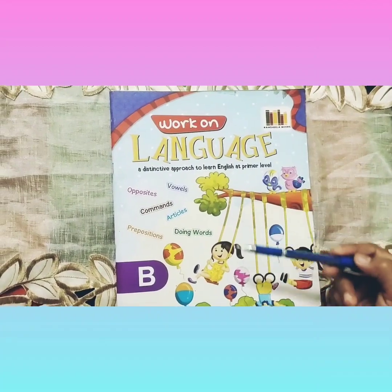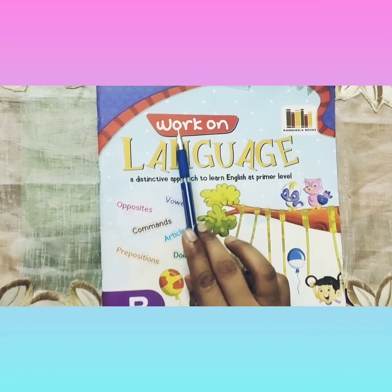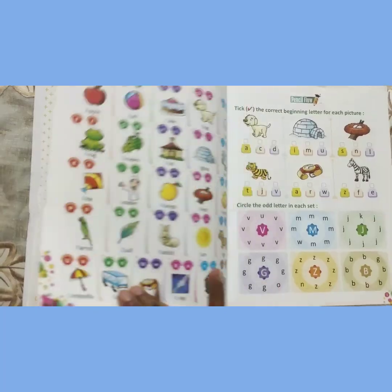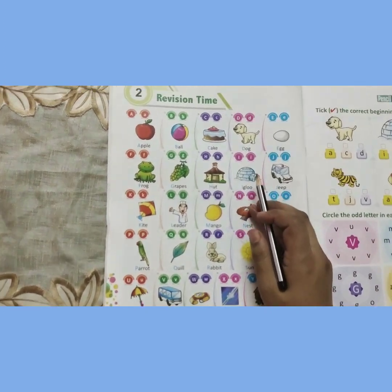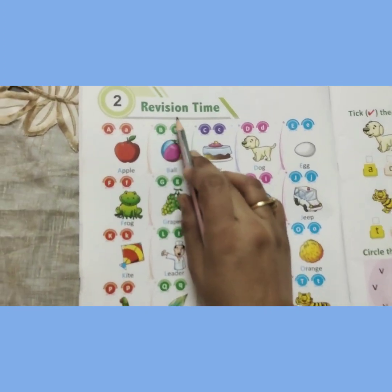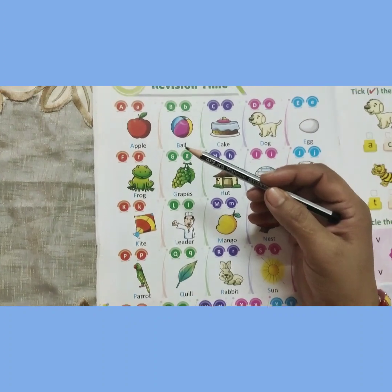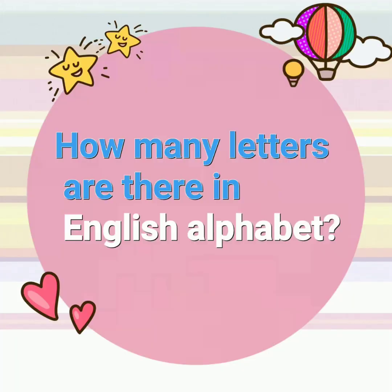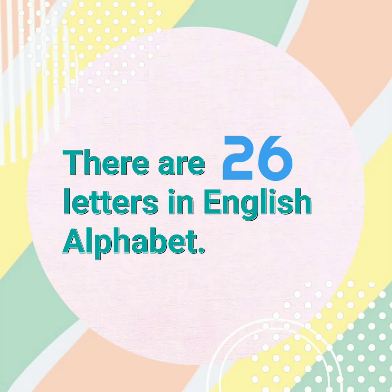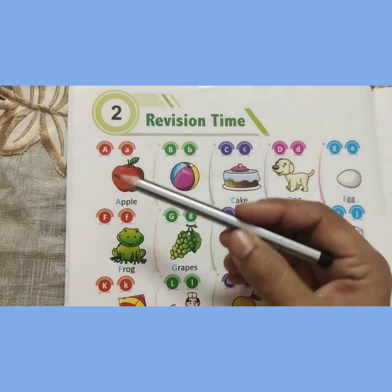This is our English reading book. The name of our English reading book is Work on Language. All of you open page number 4. It is the second chapter: Revision Time. Here, alphabets A to Z are given. Do you know, children, how many letters are there in the English alphabet? There are 26 letters in the English alphabet. Let's start to read this chapter.